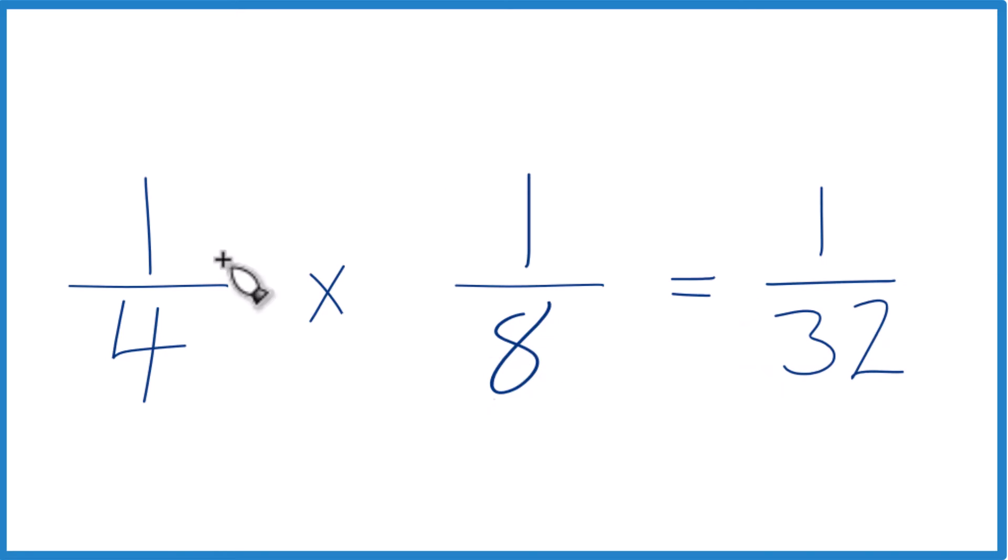So we end up with 1/4 times 1/8, that equals 1/32. Or you could say 1/4 of 1/8 is 1/32. And note it doesn't matter if you have 1/4 of 1/8 or 1/8 of 1/4, you're going to get the same answer. The order doesn't matter here with multiplication.